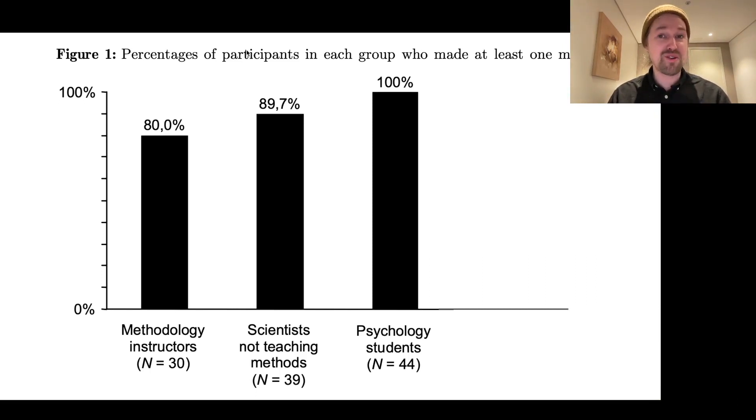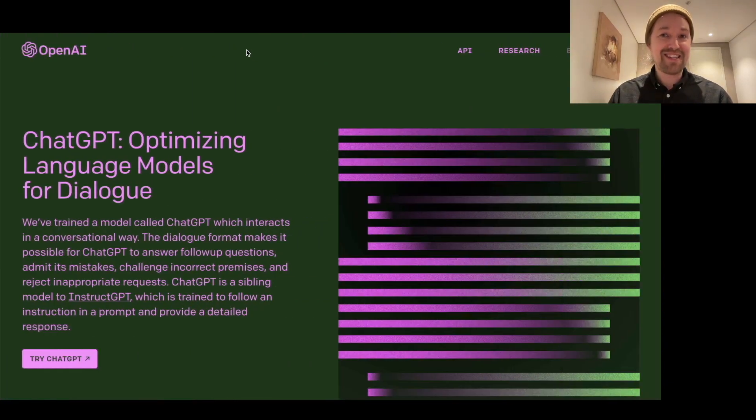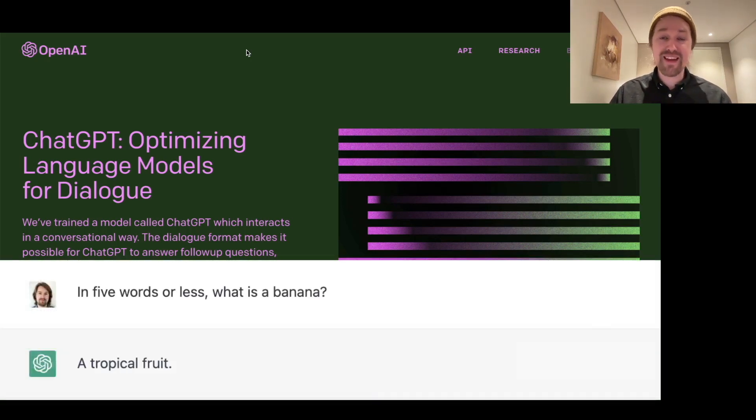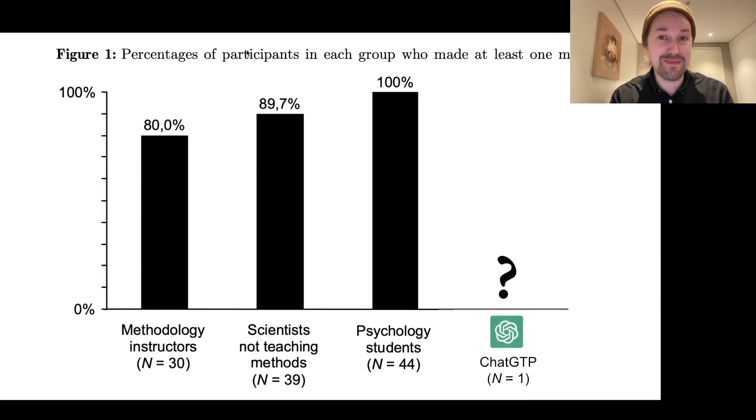But there are not only students and researchers in this world. Since November, there's also a pretty decent AI. ChatGPT is an awesome AI, language model and chatbot. It's trained on a huge corpus. Wikipedia is like just a couple of percentages of this corpus. It can correctly answer most questions that you throw at it. And in many senses, it's a pretty decent alternative to Wikipedia. Now, if our confused student goes to ChatGPT with questions around p-values, how well will ChatGPT do? That's what I tried to figure out.